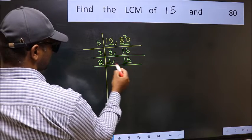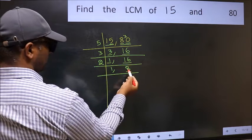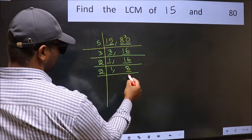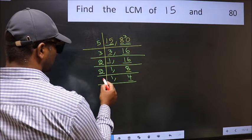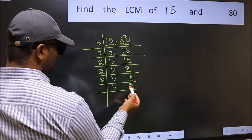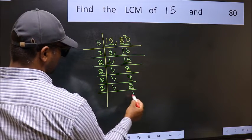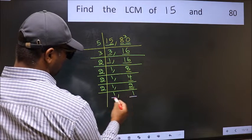16 is 2 times 8 is 16. Now here we have 8. 8 is 2 times 4 is 8. Now here we have 4. 4 is 2 times 2 is 4. Now here we have 2. 2 is a prime number, so 2 times 1 is 2. So we got 1 in both places.